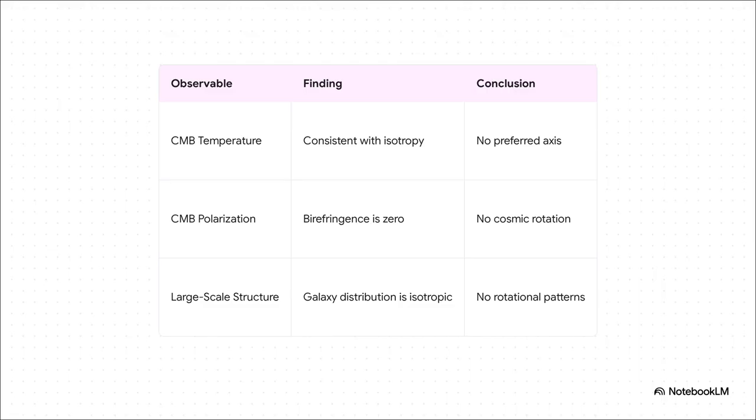And the verdict from astronomers is in. They have looked everywhere. They've analyzed the temperature of that ancient light, the way it's polarized, they've mapped the locations of millions of galaxies, and in every single test, the answer is the same. Our universe looks the same in all directions. It's remarkably non-spinny.